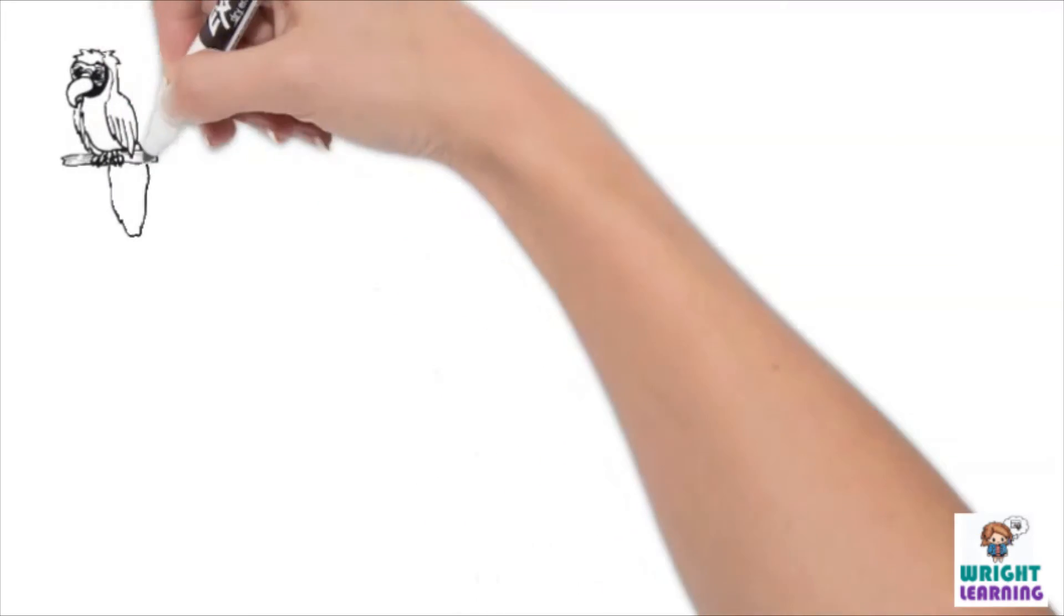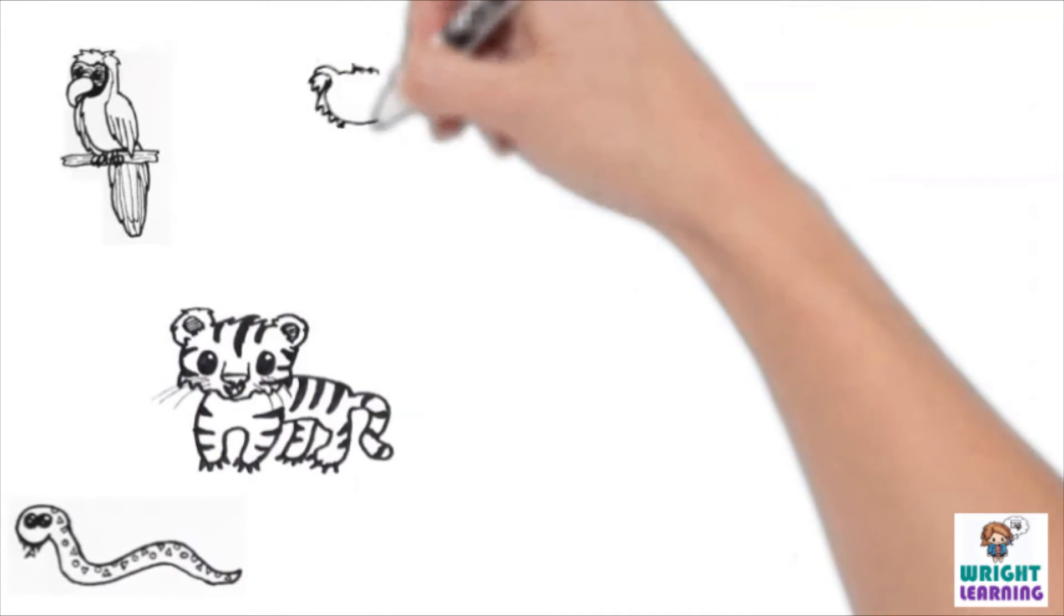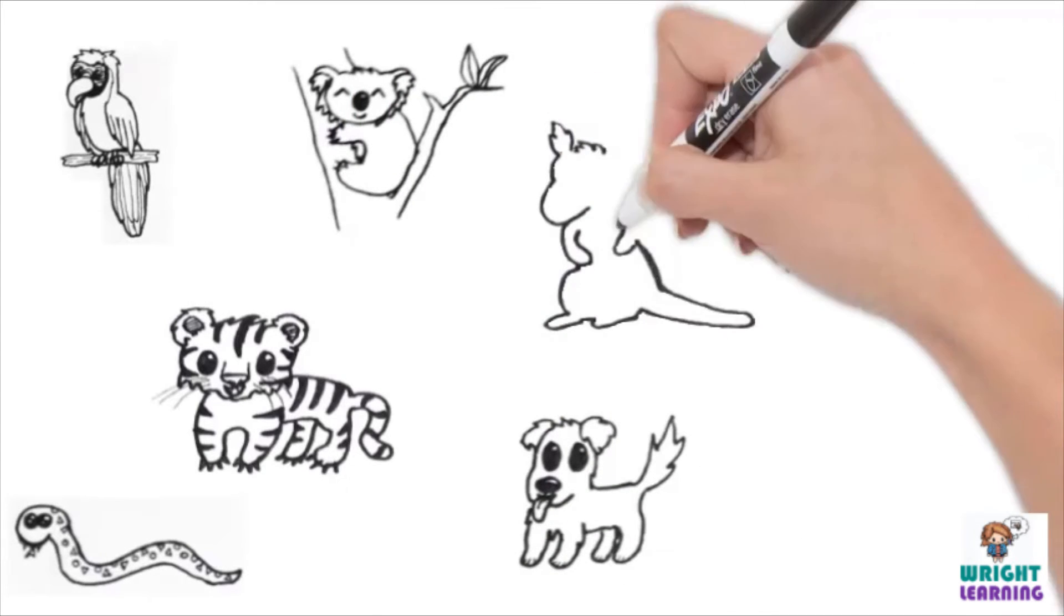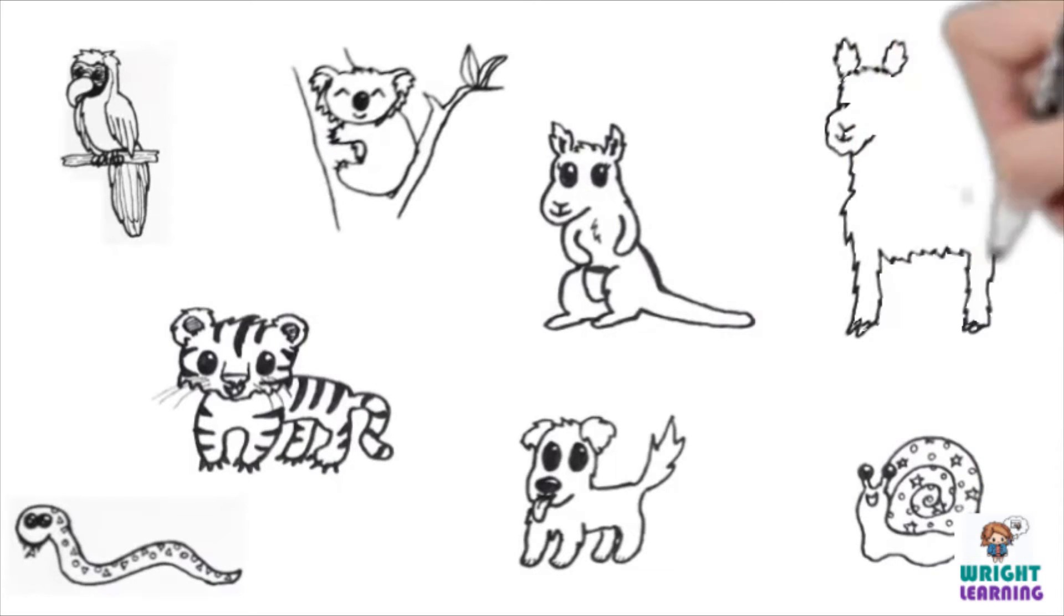Okay, so this is our new group of animals or organisms to work with. We have a macaw, a tiger, a snake, a koala, a dog, a kangaroo, a snail, and an alpaca.